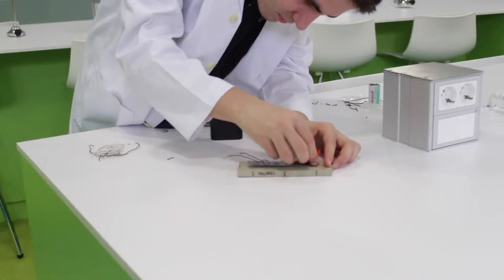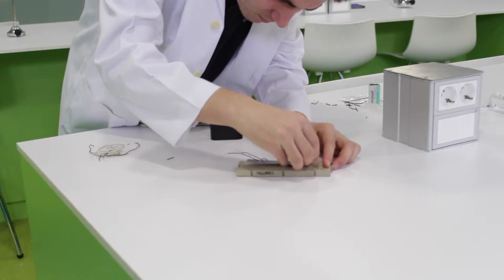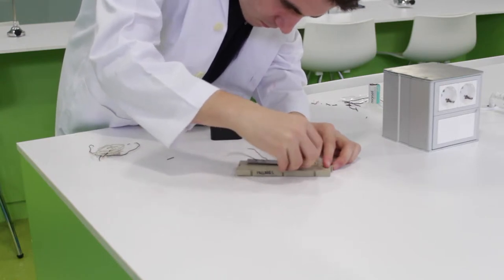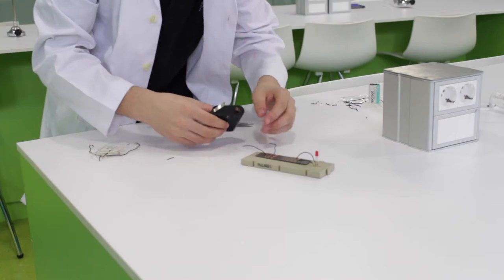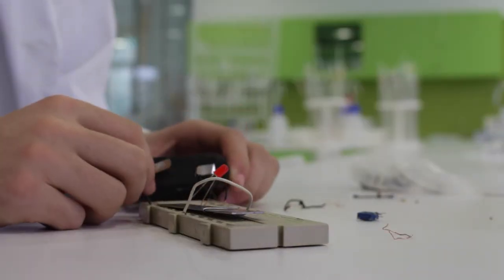Now let's start testing. We are building a simple electric circuit in order to test conductivity. If the light bulb turns on, the material introduced in the circuit is an electric conductor.